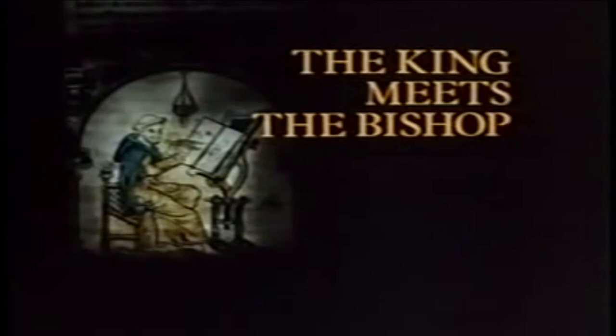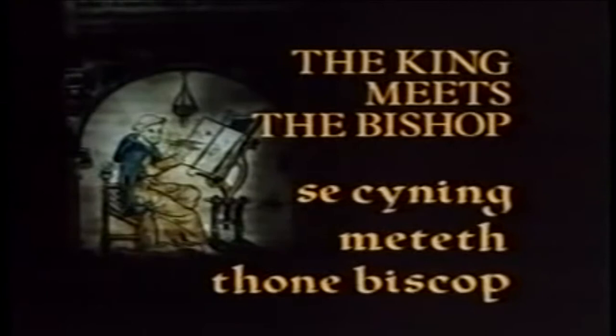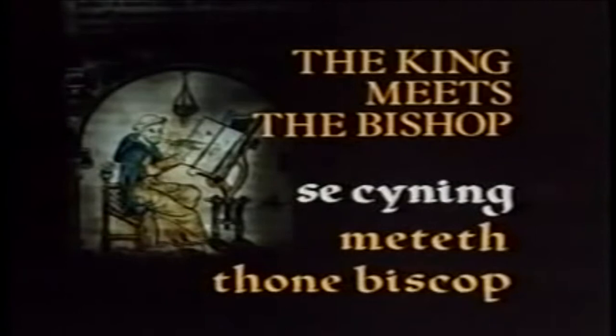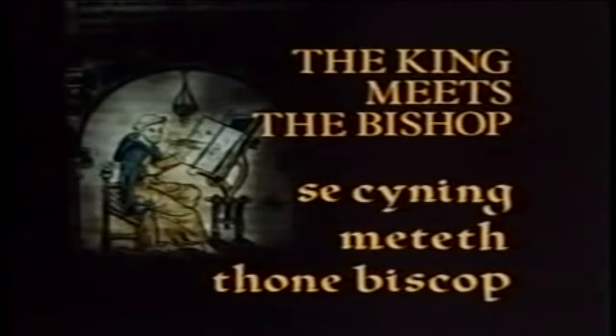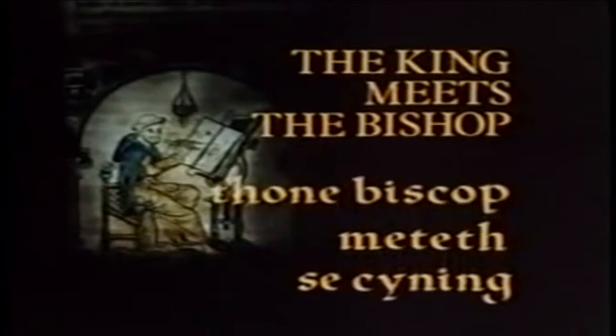Take a simple Old English sentence like 'The King meets the Bishop' — Sir König meteth Thona Bishop. Here, Sir König is the subject of the sentence, and Thona Bishop is the object. It's the form of the words, not word order, which give the sentence its meaning. In fact, if you change the word order, the meaning remains the same — Thona Bishop meteth Sir König still means 'The King meets the Bishop.'